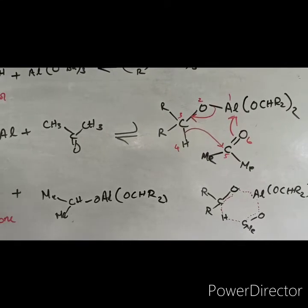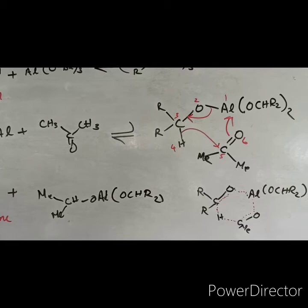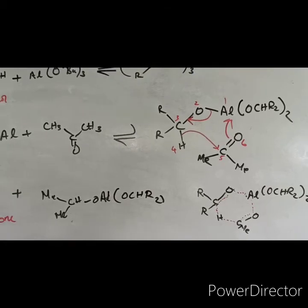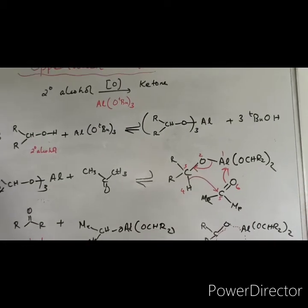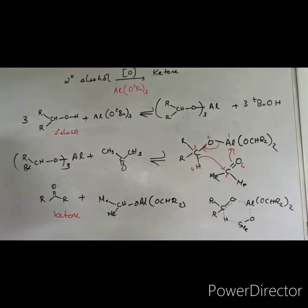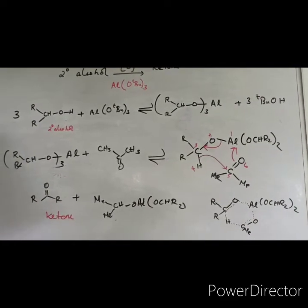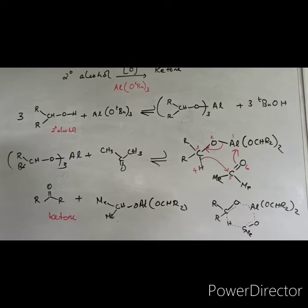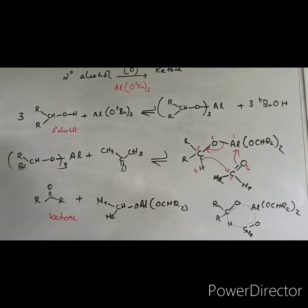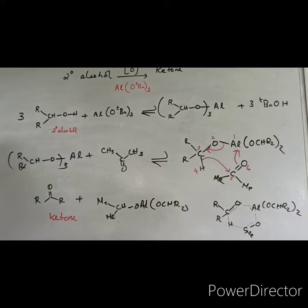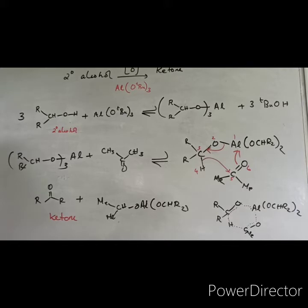The drawback of this reaction is that aluminum compounds are basic and can bring about prototropic shift within the product. For example, oxidation of cholesterol causes a migration of carbon-carbon double bond. So there is a lot of complication in this reaction.